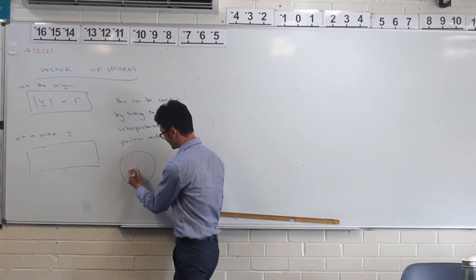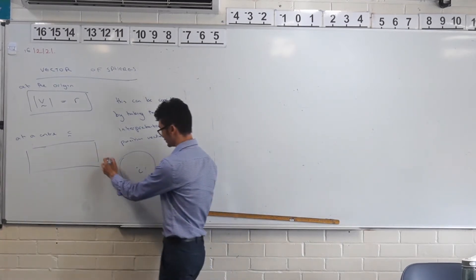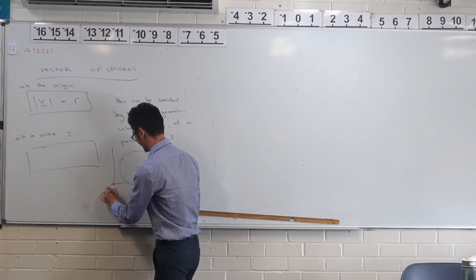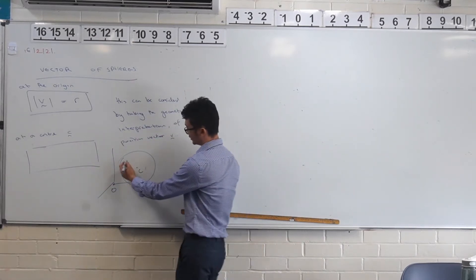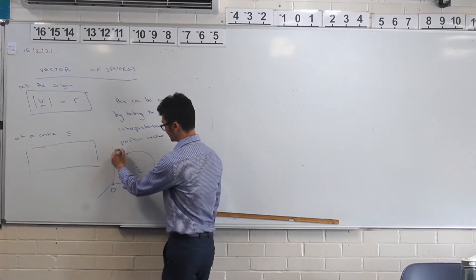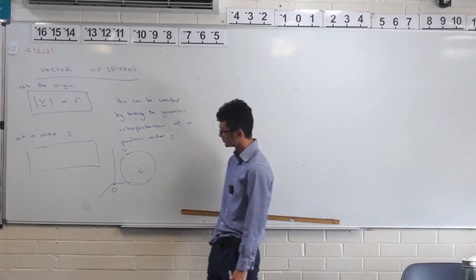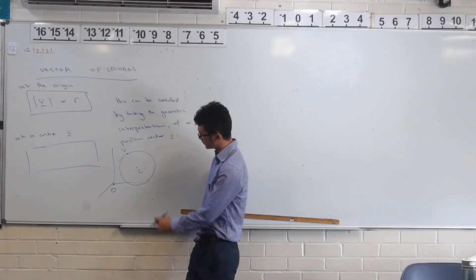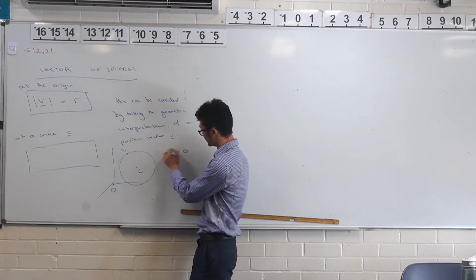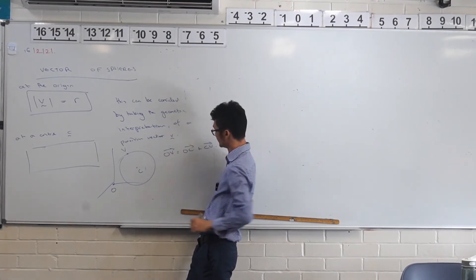So if this is the C here, and O as in the origin. So let's say O is here or something, that's O there. And let's say we have some point, now V changes depending on where it is, but let's say V is here or something. So what are you saying then? OV is equal to OC plus CV. Yes, that's pretty simple.